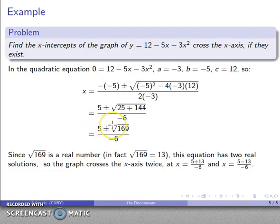Once at x, 5 plus 13 over negative 6, and the other at 5 minus 13 over negative 6.